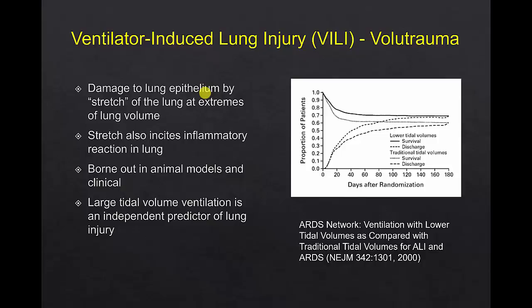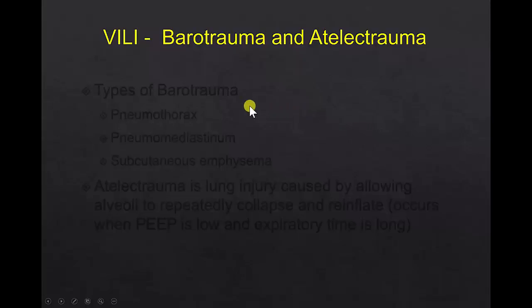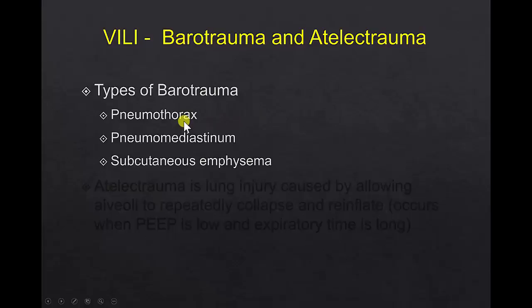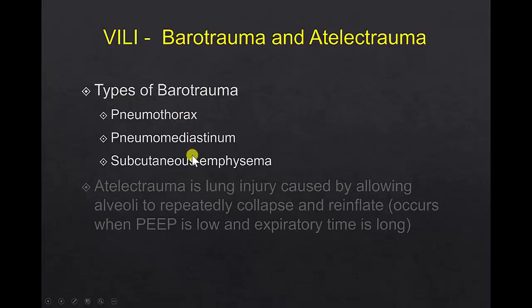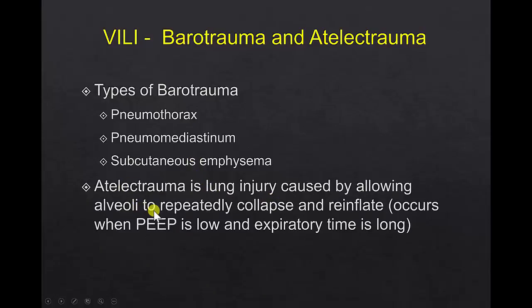In the ARDS Network study comparing conventional versus low tidal volume ventilation, the proportion of patients who survived was significantly higher in the low tidal volume strategy, and length of ICU stay and days on mechanical ventilation were shortened. Types of barotrauma include pneumothorax, pneumomediastinum, and subcutaneous emphysema. Atelectrauma is lung injury caused by allowing alveoli to repetitively collapse and reinflate, which occurs when PEEP is low and expiratory time is long enough to allow deflation.